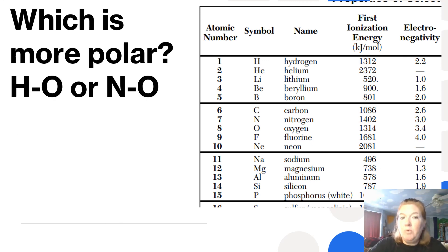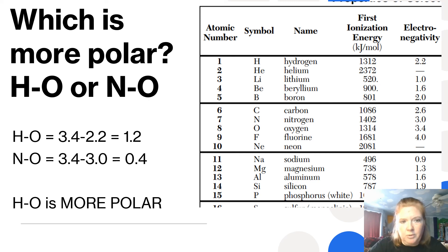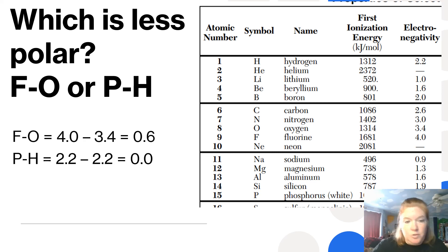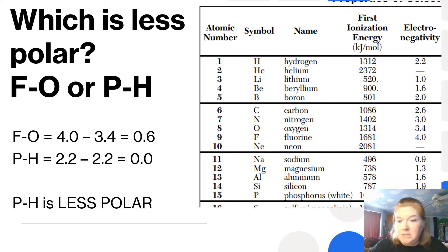Which bond is more polar? Do the subtraction for both and compare the answers — whichever has the bigger answer is more polar. The bond with a difference of 1.2 is more polar. For which is less polar, do the same thing. The bond between P and H is less polar because its electronegativity difference is smaller.